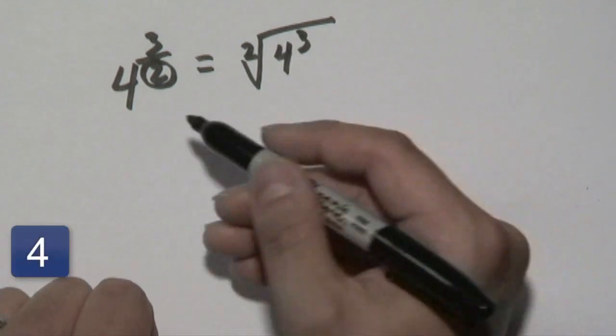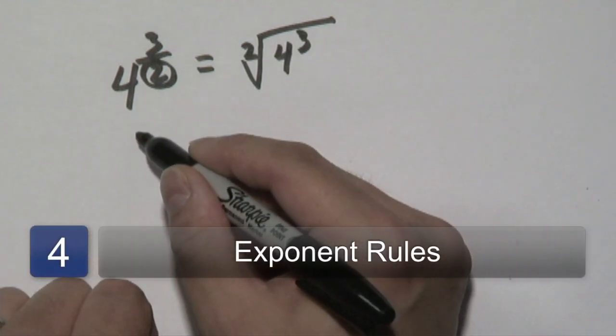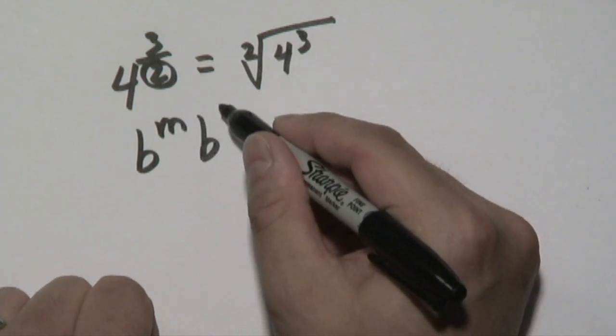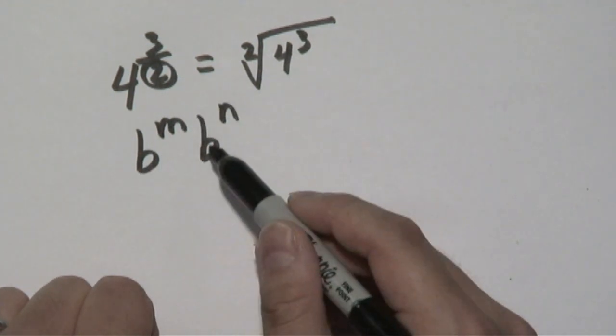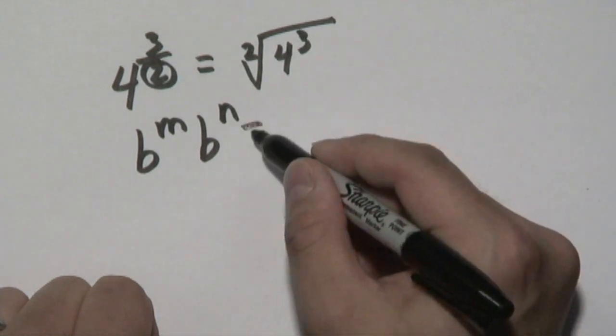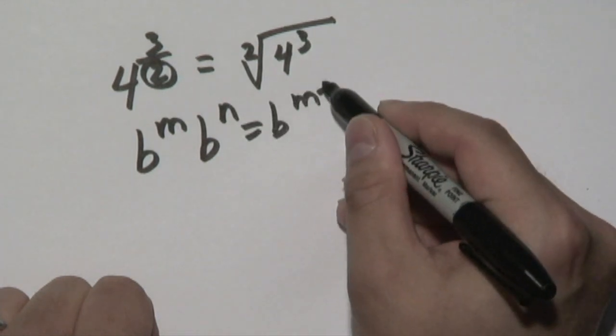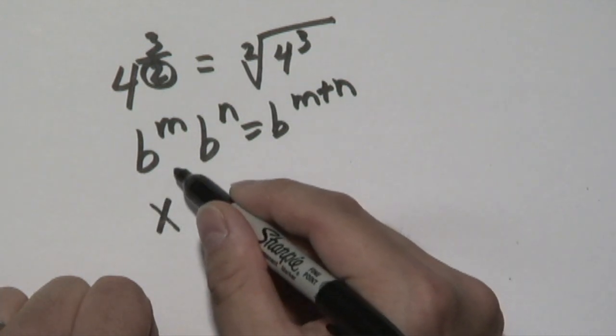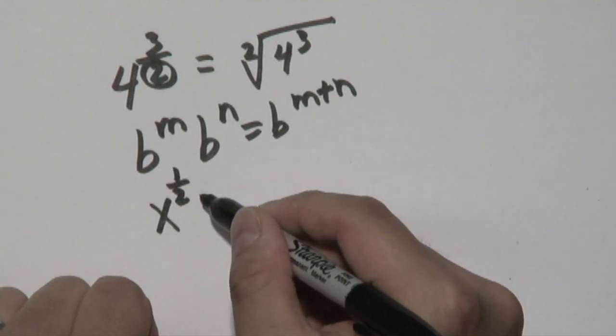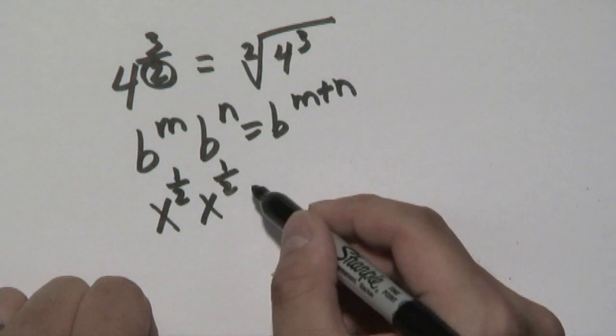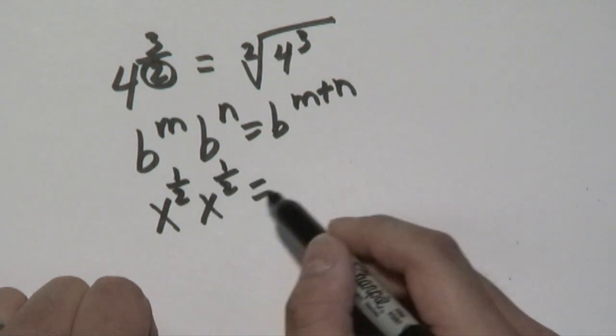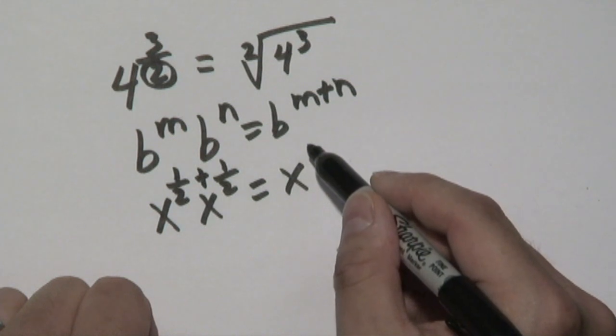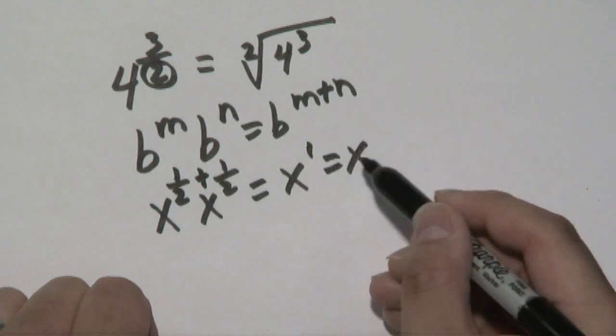Just a couple of review rules for properties of exponents. If you have b to the m times b to the n, as long as the bases are the same, you can add those exponents. So for example, in this case, if you have x to the 1 half times x to the 1 half, you can add those because the bases match, and 1 half plus 1 half is x to the 1, or you can simply just leave it as x.